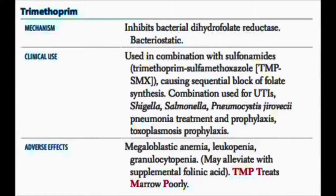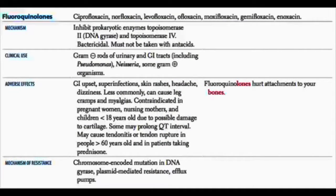The next group of drugs are the fluoroquinolones. Anything with '-flox' in the name is a quinolone. They inhibit DNA gyrase, which is topoisomerase 2. This blocks the ability to synthesize new DNA for replication as well as the ability to make mRNA for protein synthesis. Just like tetracyclines, quinolones cannot be taken with antacids due to impaired gut absorption.